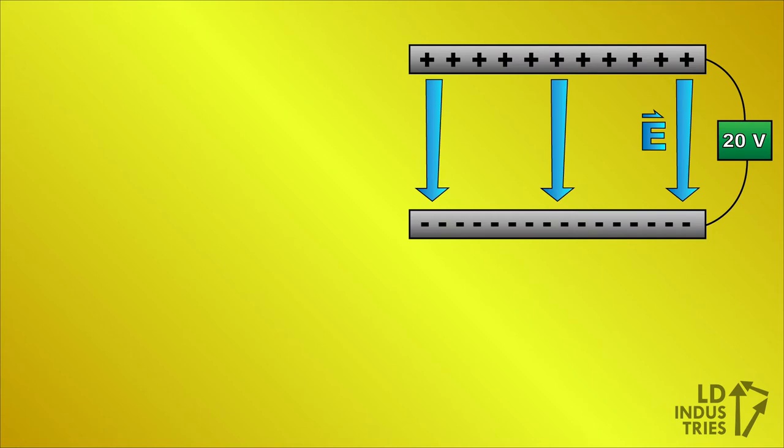Let's look at an example. Here's a uniform electric field made by connecting two parallel plates to a 20 volt power source. The electron is placed at the negative plate, and it will accelerate towards the positive plate because of the electric force.